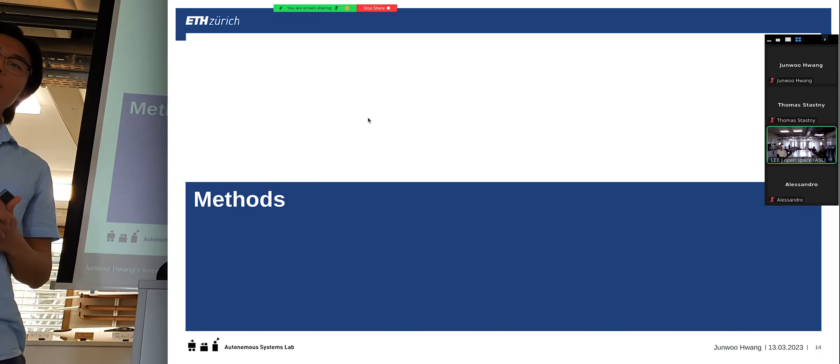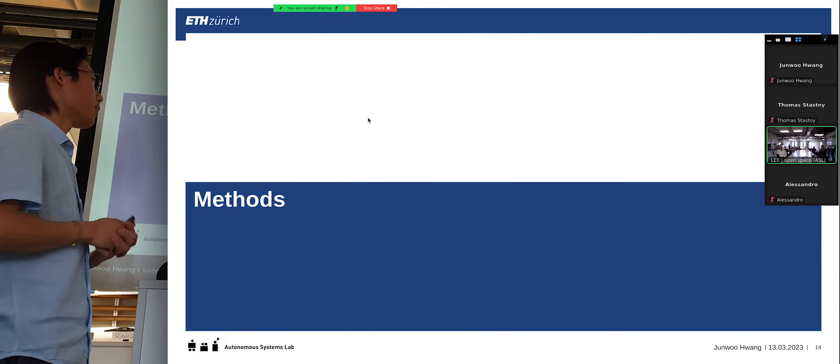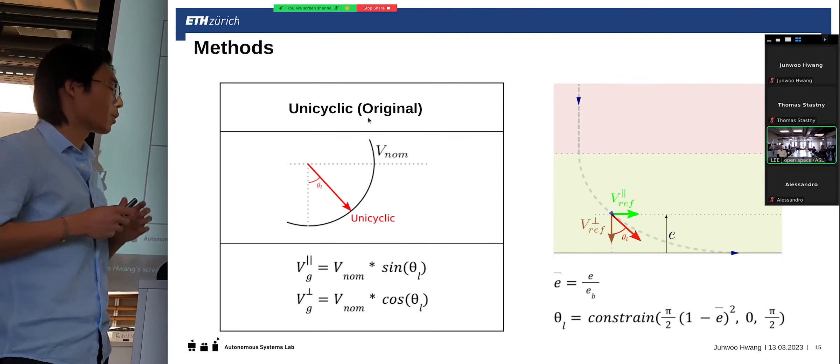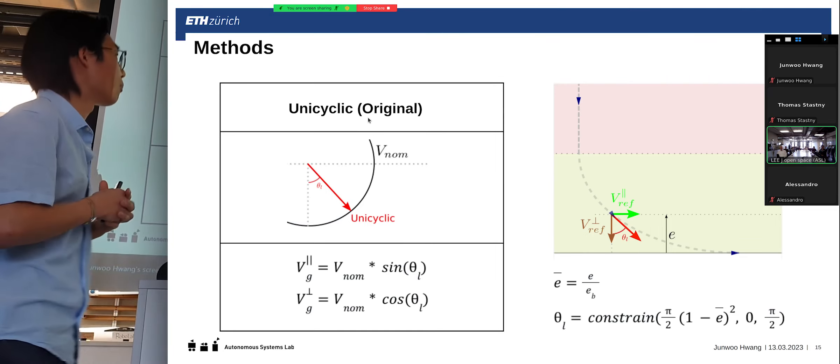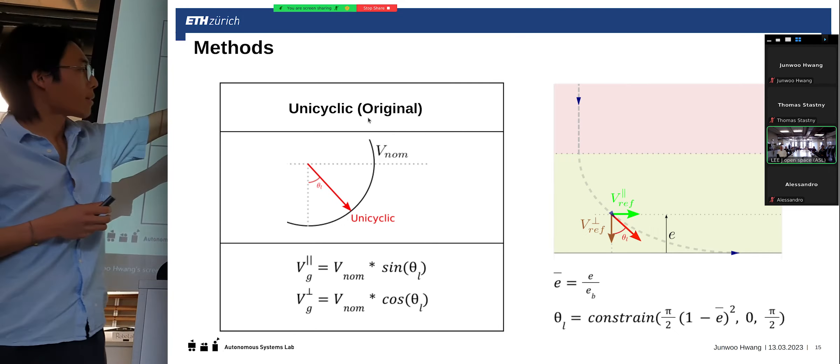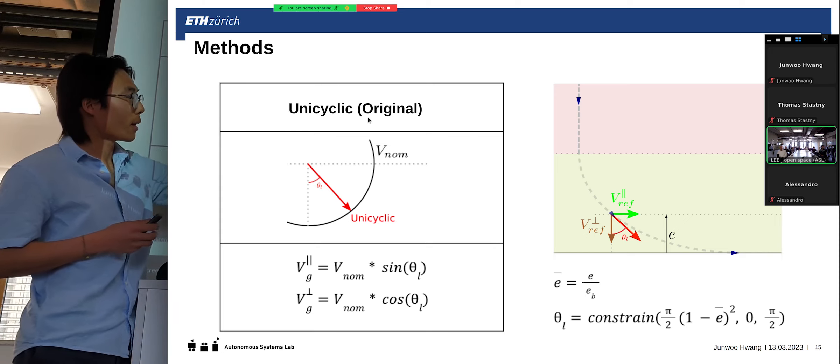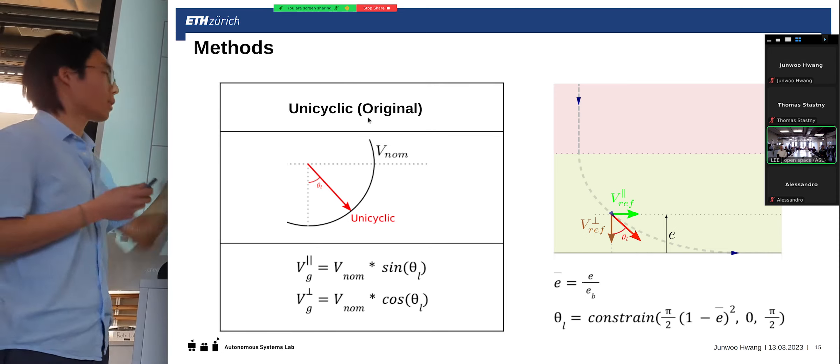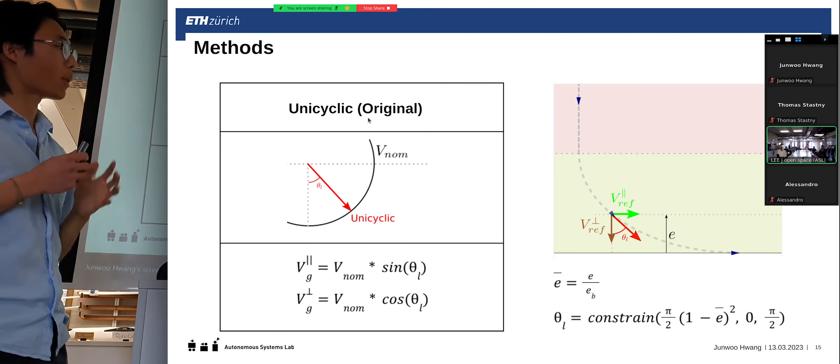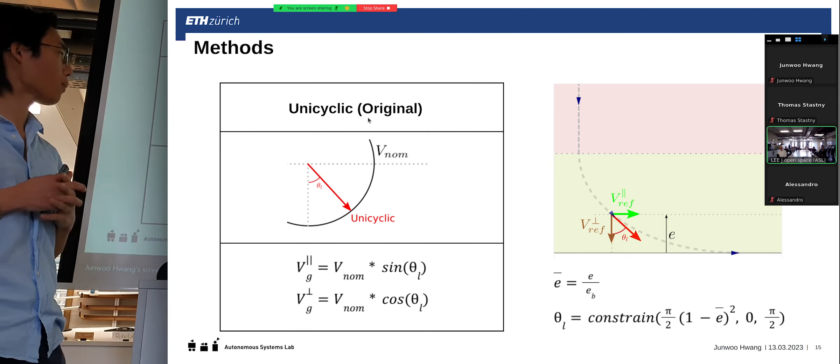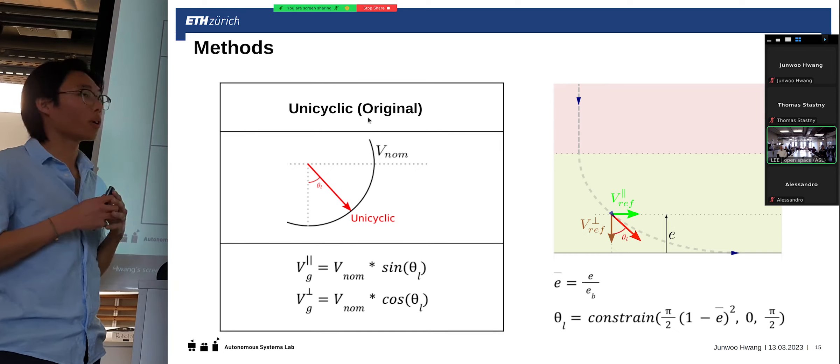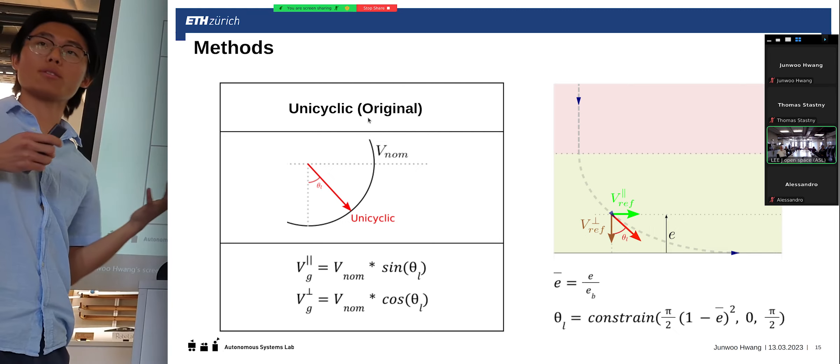So, these are the methods that I am proposing, and also the base method that we are referencing. The first method is the unicycle method, which was the fixed-wing navigation method. For that, we have a constant nominal speed, and as it approaches a path, it has a look-ahead angle, which basically is altering this red arrow, bearing vector, towards the path as it comes close to the path. And, simply, it will map it with the nominal speed, because the fixed-wing has a nominal constant speed.